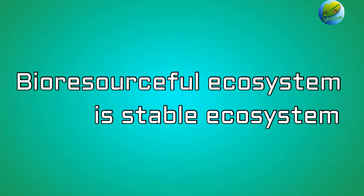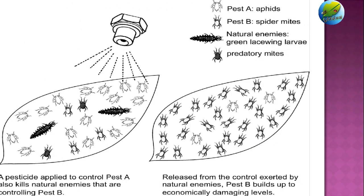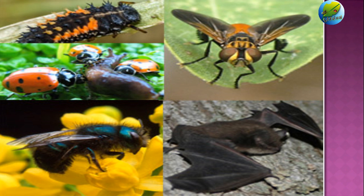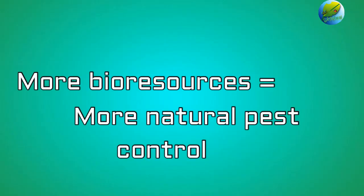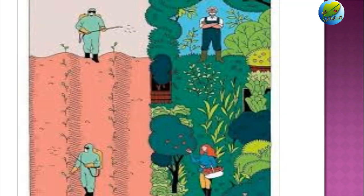Such ecosystems will be more stable. Insecticides deplete the bio-resources in the ecosystem, making it less stable and prone to pest outbreaks by killing natural enemies and other competitors in the agro-ecosystem. Natural control will be high when bio-resources such as parasitoids and predators are more abundant. Even in agro-ecosystems, we can increase bio-resources by choosing more diversified cultivation rather than mono-cropping or extensive cultivation of the same species.